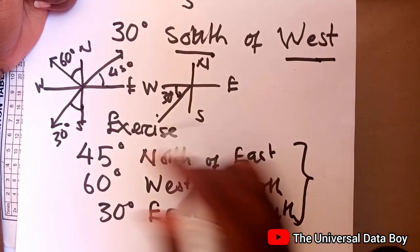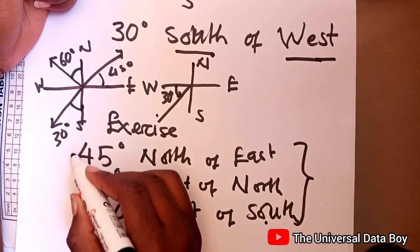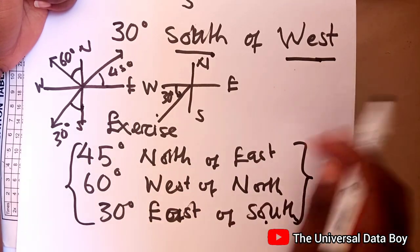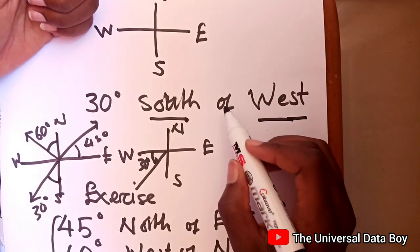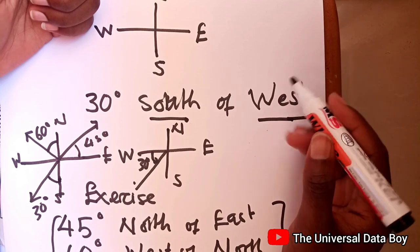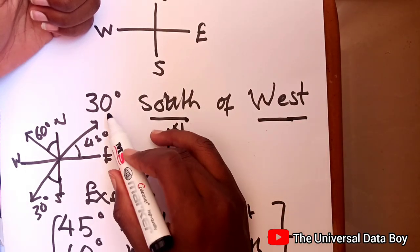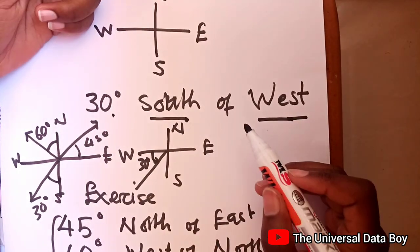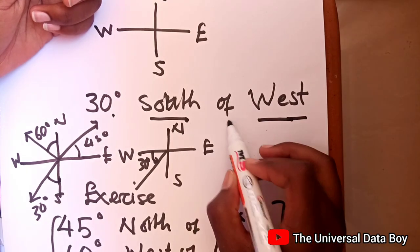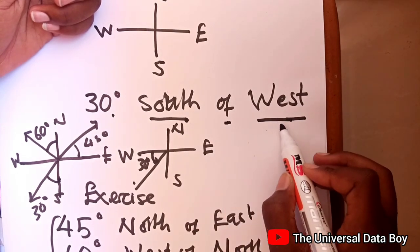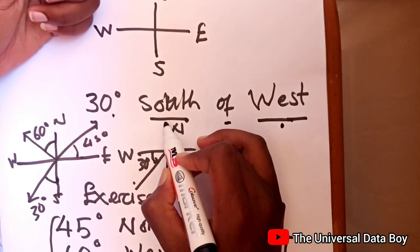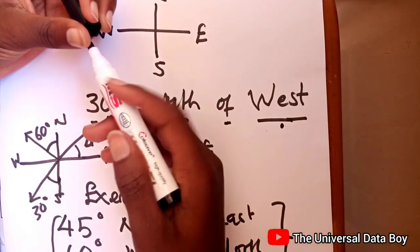So you can try other practice problems. The easiest way to work things out is whenever you're given the degrees and the cardinal directions, there are two, and it says 'of' in between. So you go to the other one. The other one is where it starts from. The first one is where it's going by 30 degrees or whatever angle that you're given.